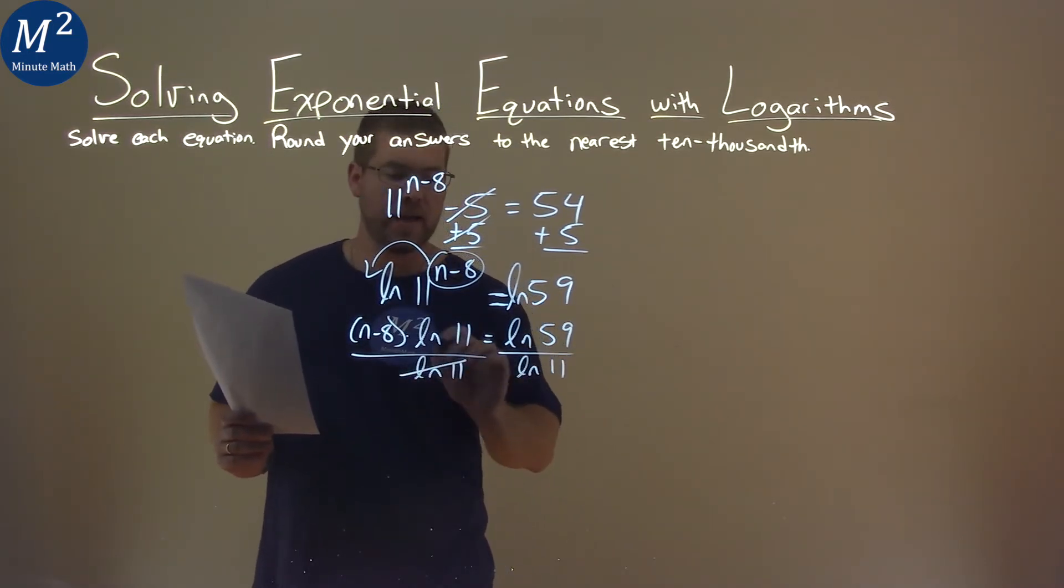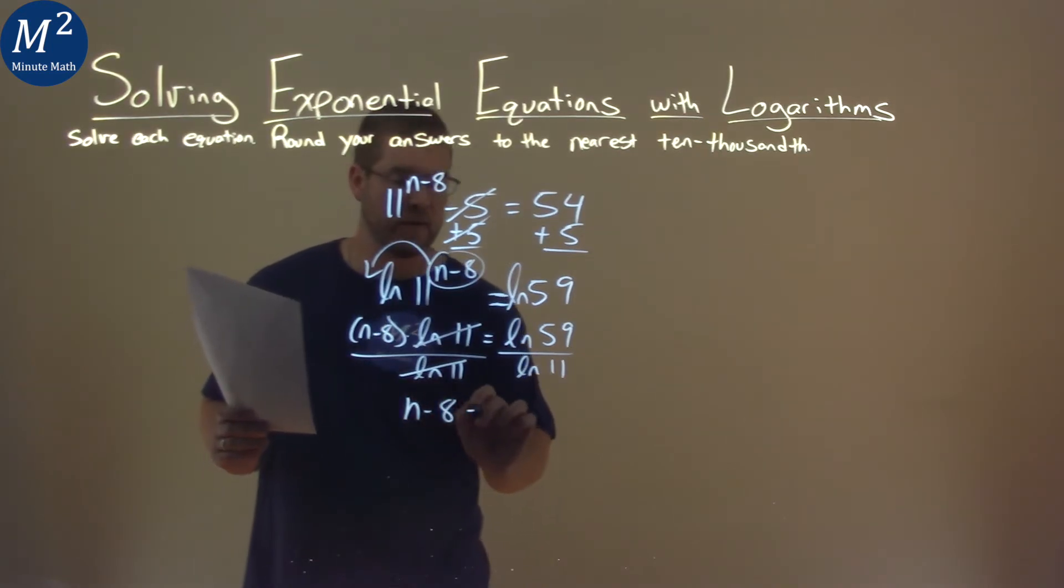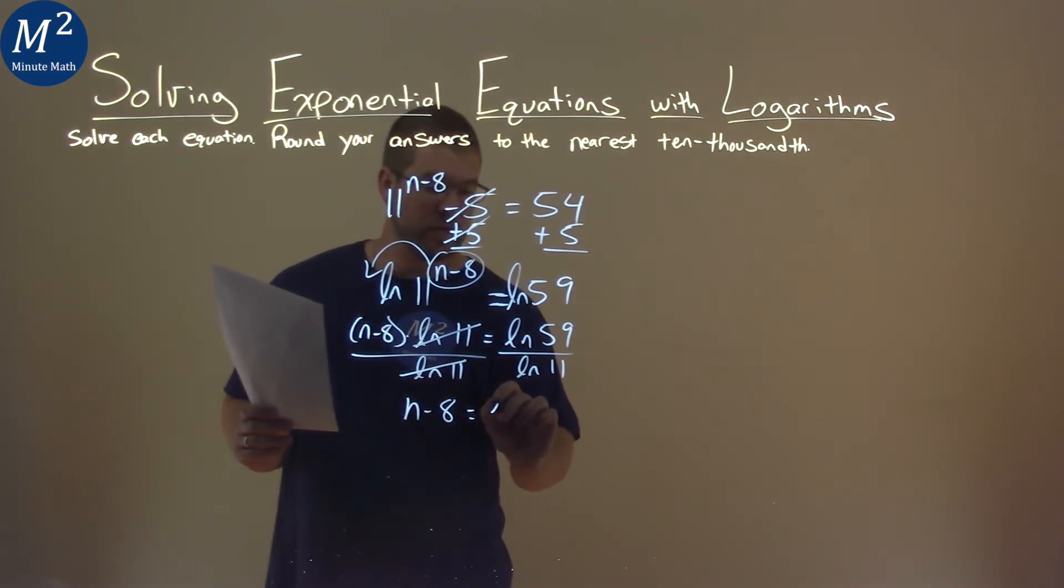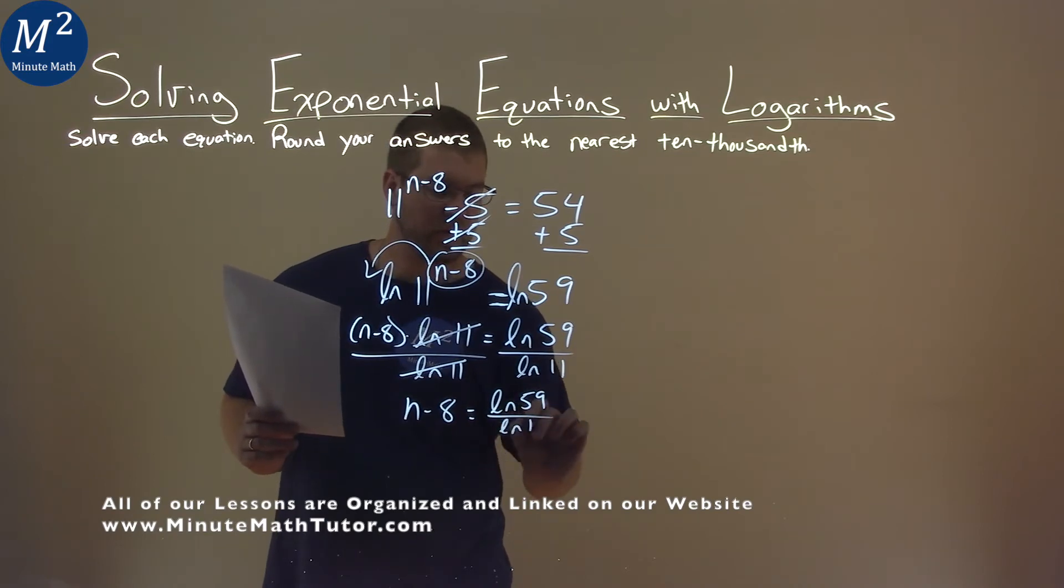I divide both sides by natural log of 11. And that cancels here, and I'm left with the n minus 8 here is equal to natural log of 59 over natural log of 11.